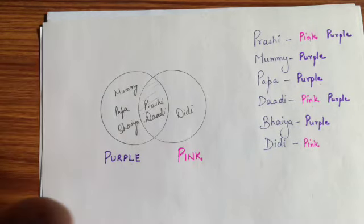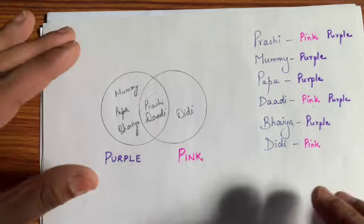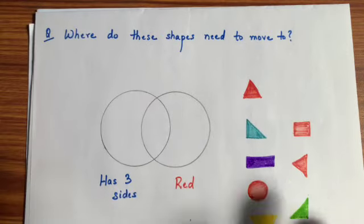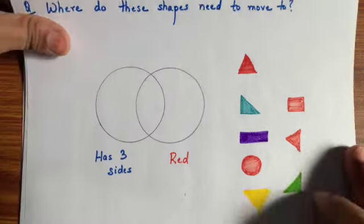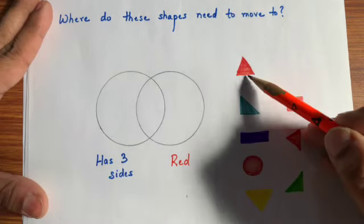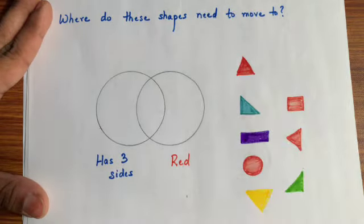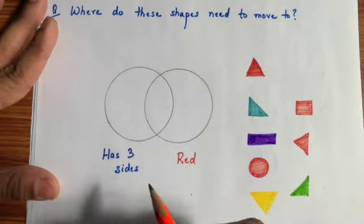Okay now ye to ho gaya hamaara Venn diagram. Sabse basic. Now next yahaan pe humne shapes include kar liya hai. Where do these shapes need to move to? Ab jaise aap dekh sakte hai ki ye triangle hai red, again a triangle blue, rectangle purple. To dekhte hai humne karna kya hai.